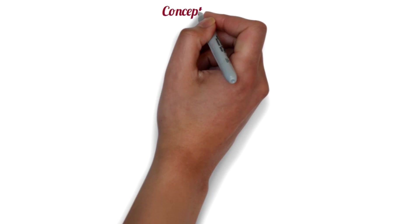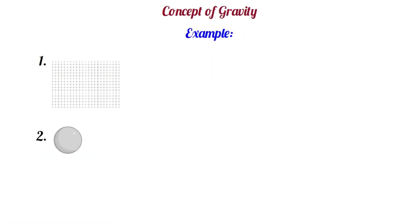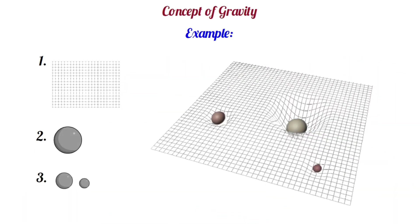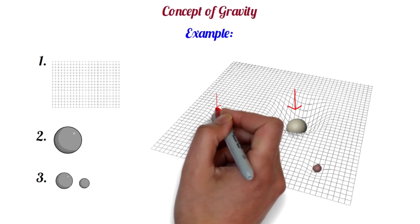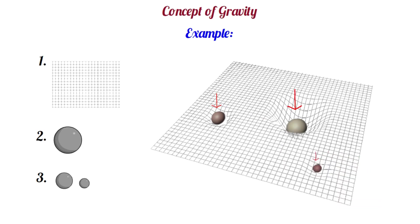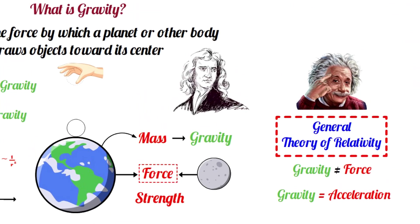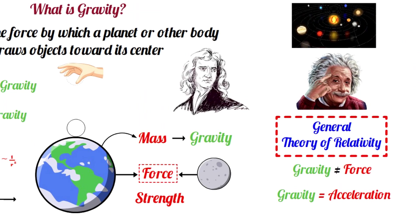Now let's understand the concept of gravity with an example. Suppose we have a piece of fabric, a large ball, and two smaller balls. If we put the big ball on the fabric, it will push the fabric inwards. Again if we put two small-sized balls on that fabric, you will see that both those balls also push the fabric inward, but less than the big one. As the big ball has pushed the fabric more inward, it will pull the small ball towards its center. Einstein said that this is why the objects in the universe attract each other.